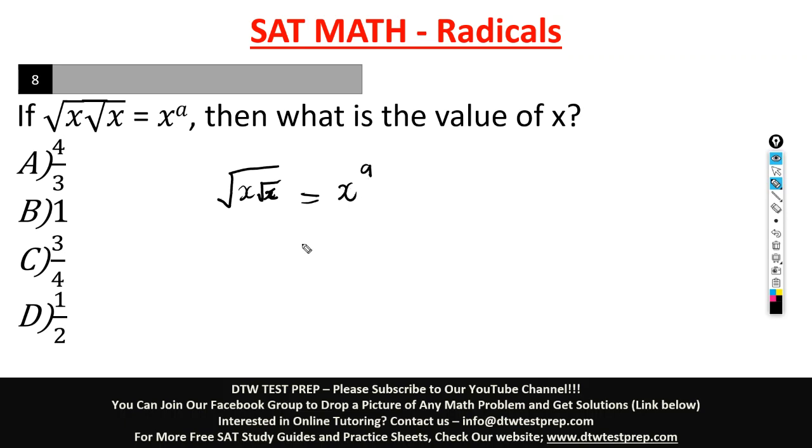So we're looking for the value of x. I always tell students that if you have the square root in radicals, you always want to kick it off. To do this, you just square. So you square both sides. When you square, this first square root will cancel out.